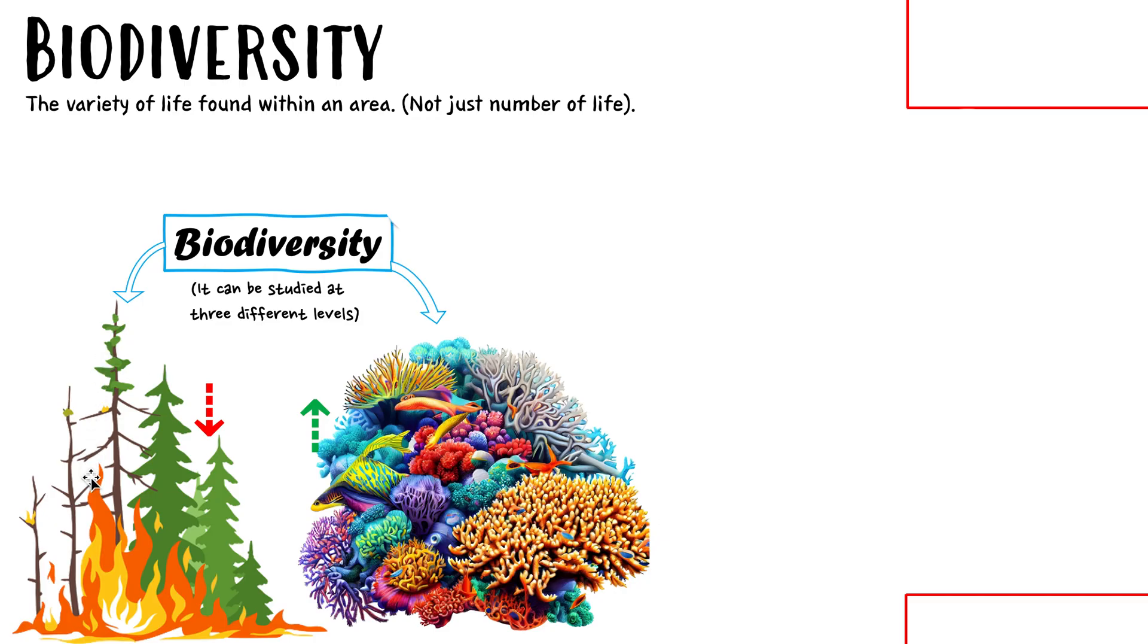This one right here, this burnt down forest is an example of low biodiversity because the organisms, the plants, the trees are being killed. The animals in there are being killed and chased away by the fire. So this area will have not only a low number of life, but also a low variety of life. So this is an example of low biodiversity.